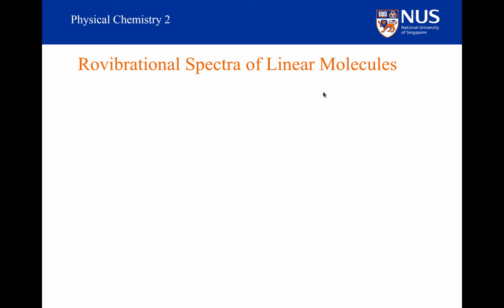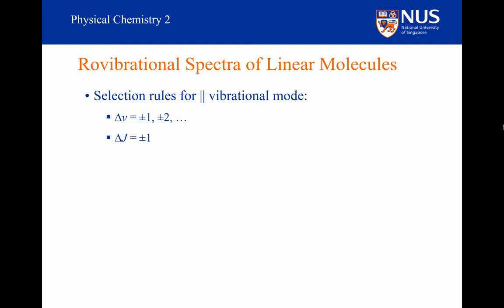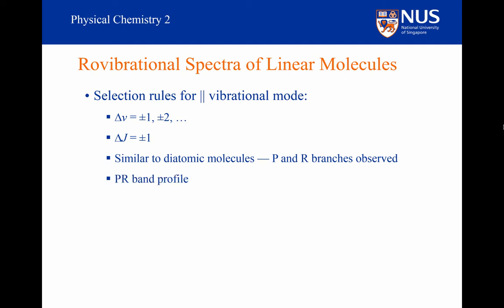We'll start off with the roto-vibrational spectra of linear molecules. Such molecules can have either parallel or perpendicular vibrations. For a parallel vibrational mode, delta V — the change in the vibrational state — can be equal to plus or minus 1 or plus or minus 2, etc. And delta J can be equal to plus or minus 1. So we get a spectrum with a similar appearance to that we had for diatomic molecules. We'll get P and R branches appearing in the roto-vibrational band. This is known as a PR band profile, just like the classic PR band profile we saw for HCl.